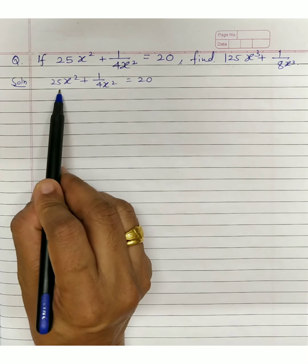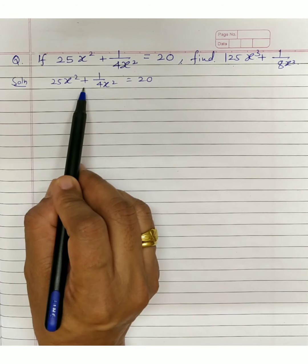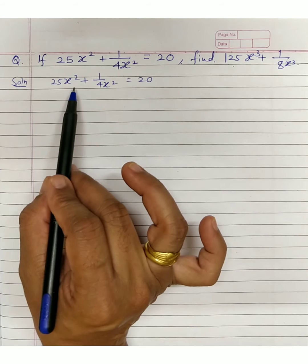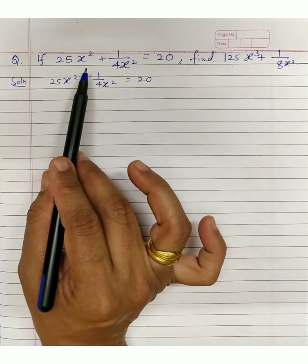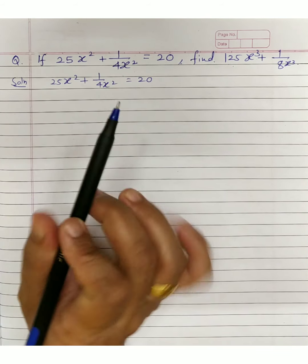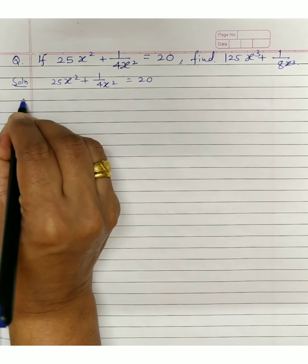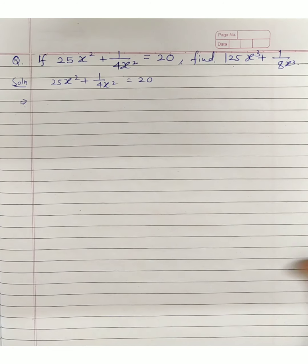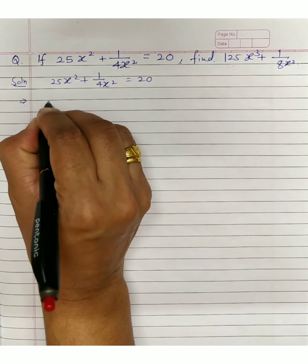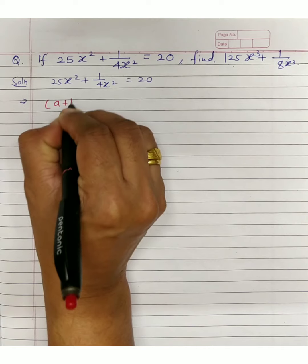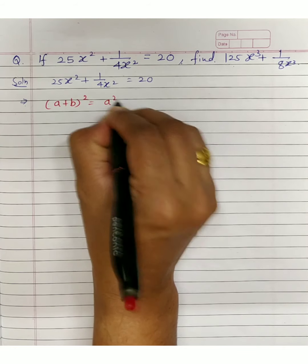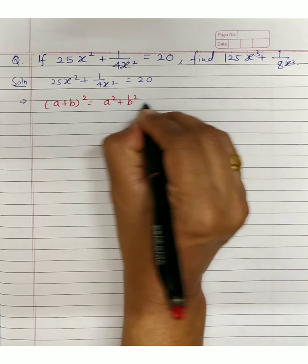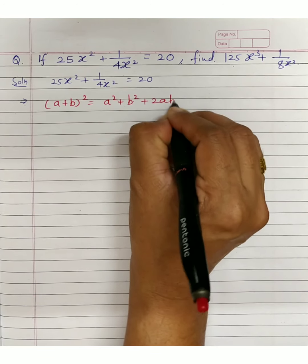What we have is (5x)² + (1/(2x))² — the whole square values. So using this, we will first find the value of 5x + 1/(2x). The connecting formula we are going to use is (A + B)² = A² + 2AB + B², which we can write as A² + B² + 2AB for simplification.